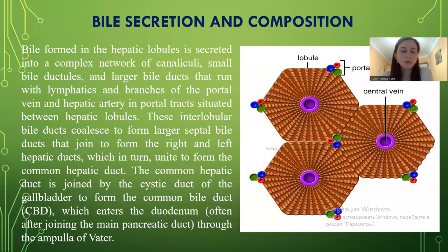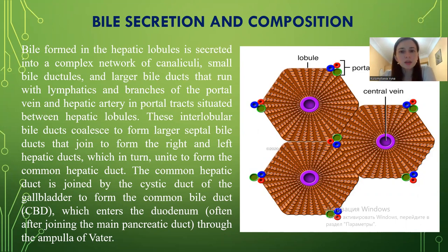Bile formed in the hepatic lobules is secreted into a complex network of canaliculi, small bile ductules and large bile ducts, which run with lymphatics and branches of the portal vein and hepatic artery in portal tracts situated between hepatic lobules. These interlobular bile ducts coalesce to form large septal bile ducts, which join to form the right and left hepatic ducts, which in turn unite to form the common hepatic duct. The common hepatic duct is joined by the cystic duct of the gallbladder to form the common bile duct, which enters the duodenum through the ampulla of Vater.